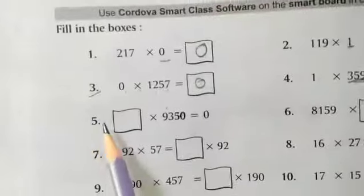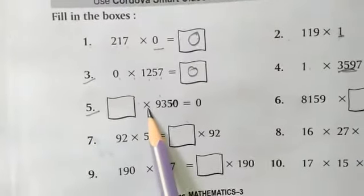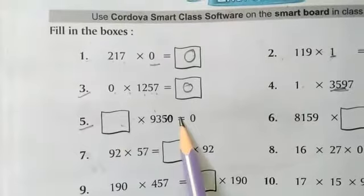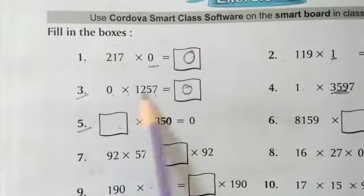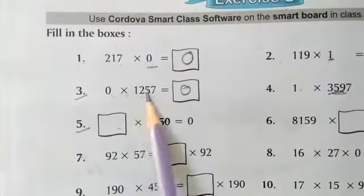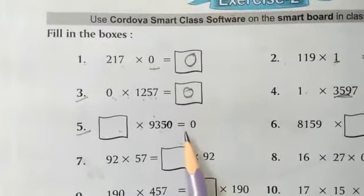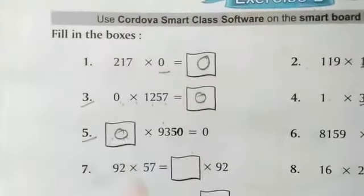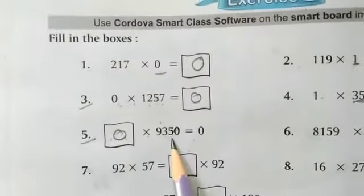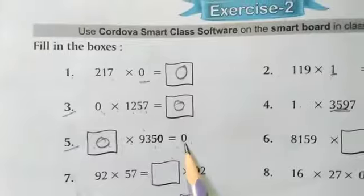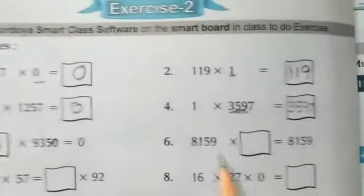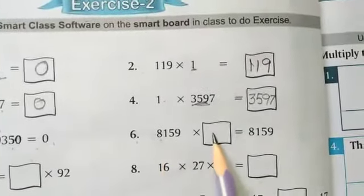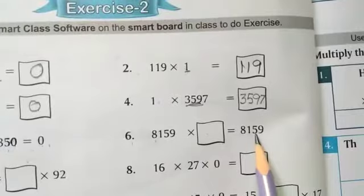Fifth question: we multiply by which number to get an answer of 0? We know we multiply by 0 to get 0, so the missing number is 0. Sixth question: we multiply by which number to get the same answer? The missing number is 1, because multiplying by 1 gives the same result.